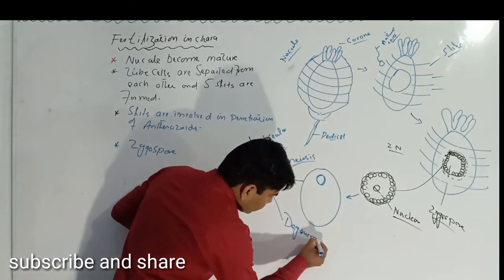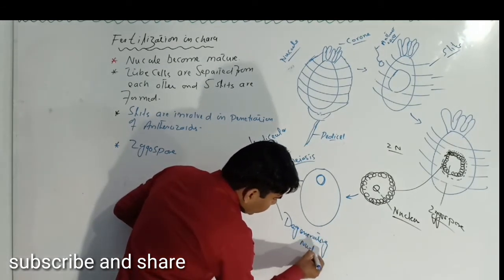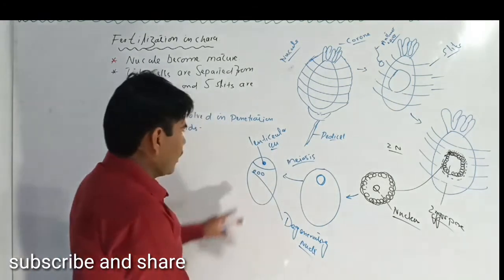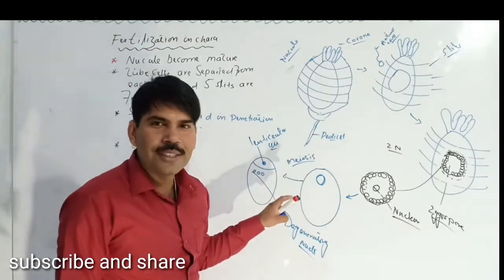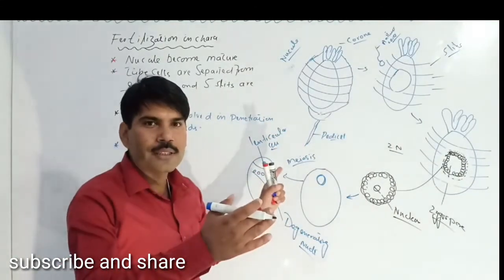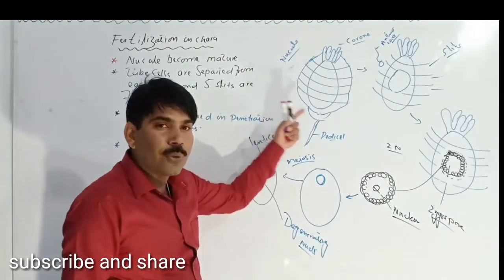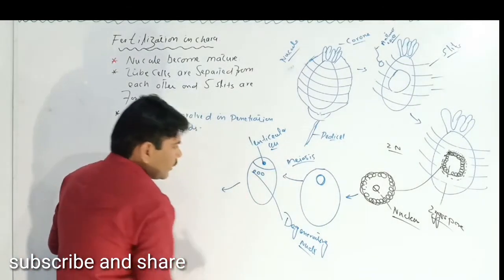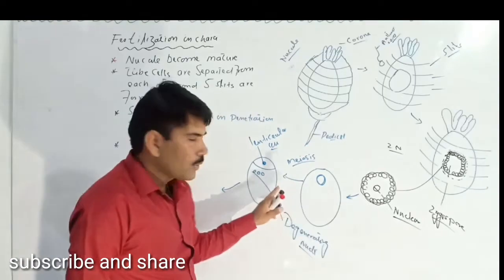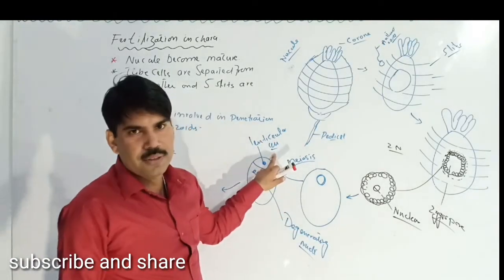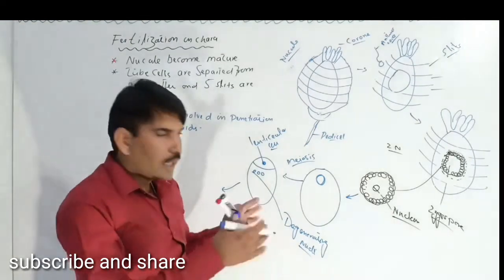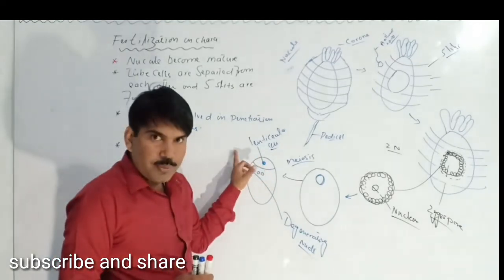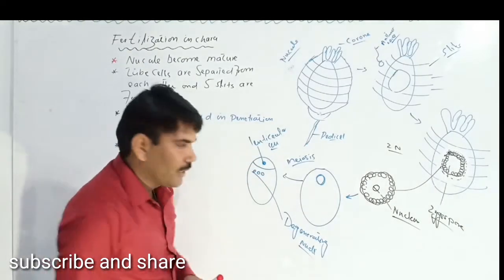The three lower nuclei are known as degenerating nuclei, and after some time these nuclei degenerate. The lenticular cell is very important because it will produce some structures and will convert into the whole body of Chara. The lenticular cell undergoes vertical division and produces two cells: one is known as the protonemial initial and the second is known as the rhizoidal initial.